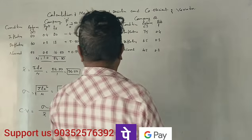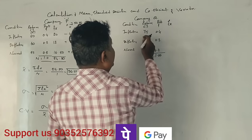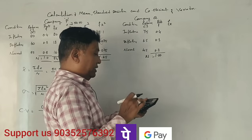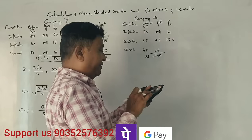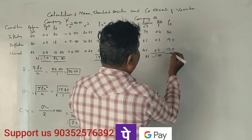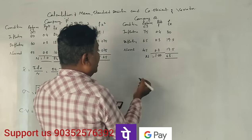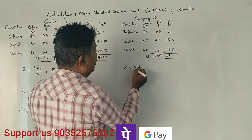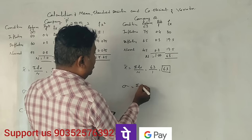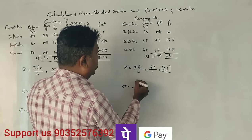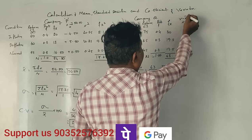Now for Company Q: f into x calculations are 75 × 0.4 equals 30; 65 × 0.3 equals 19.5; 45 × 0.3 equals 13.5. The total summation of fx equals 63, so the mean of Company Q equals 63.